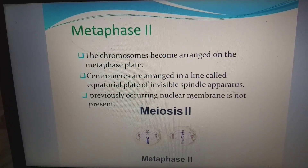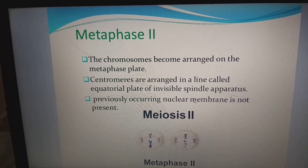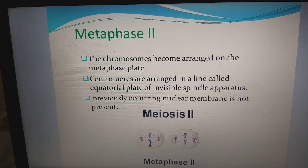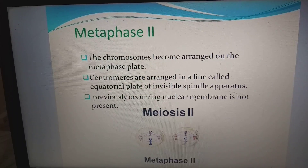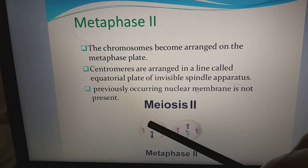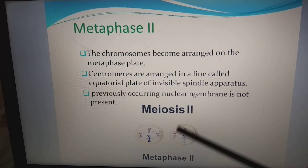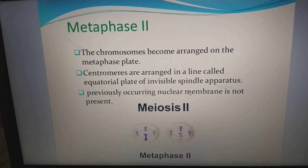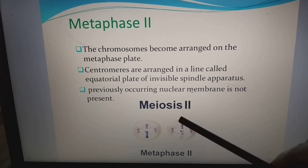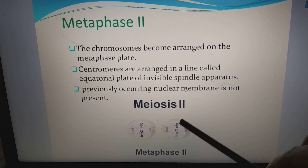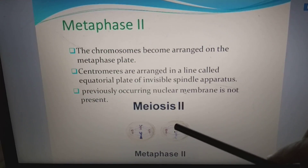In metaphase II, the chromosomes become arranged on the metaphase plate, with centromeres arranged in a line on the equatorial plate of the spindle fibers, and the nuclear membrane is no longer present. The chromosomes in meiosis II are called dyads — having only two chromatids — whereas in meiosis I they were called tetrads.